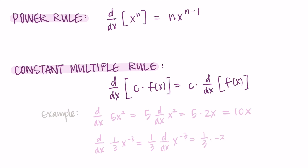The derivative of x to the negative 3: the negative 3 comes in front and the exponent decreases by 1, going from negative 3 to negative 4, leaving negative 3 x to the negative fourth — all multiplied by that one third on the outside. Simplifying: one third times negative 3 is just negative 1, so the derivative of one third x to the negative 3 is negative x to the negative fourth.